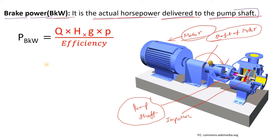So BKW is nothing but the actual horsepower or actual power which is delivered to the pump shaft by the shaft of the motor when your motor starts. Now, how is it calculated? The formula is: P_BKW = (Q × H × g × ρ) / efficiency.